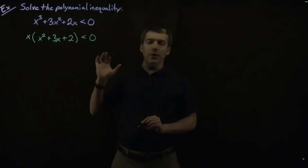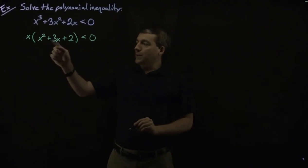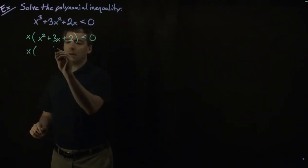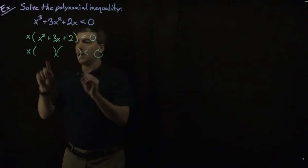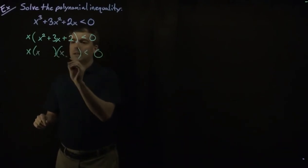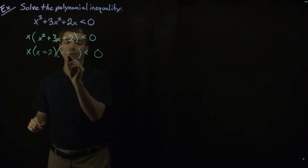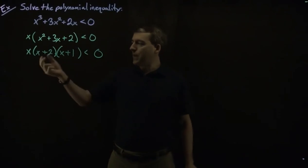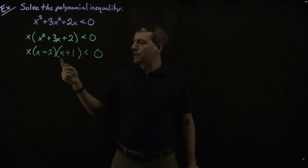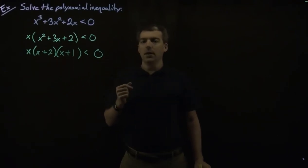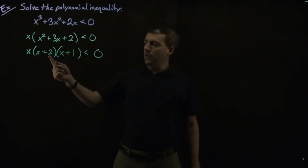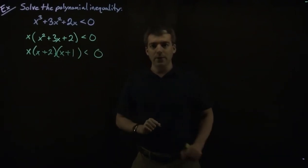Now we'll factor this quadratic: x squared plus 3x plus 2. This factors as (x plus 2)(x plus 1). Let's verify: x times x is x squared, x times 1 is x, 2 times x is 2x, and 1x and 2x makes 3x, and 2 times 1 is 2. So that's the right factorization.